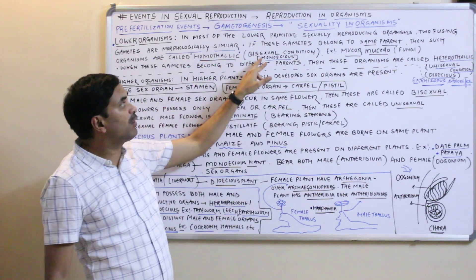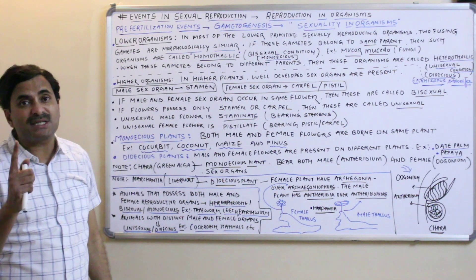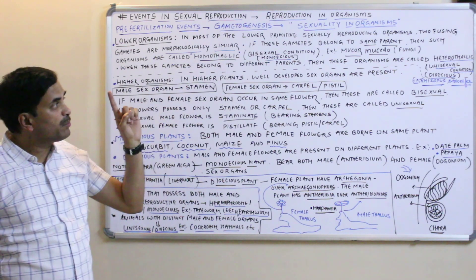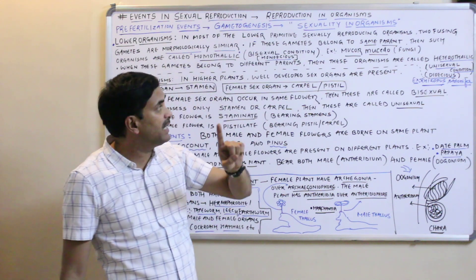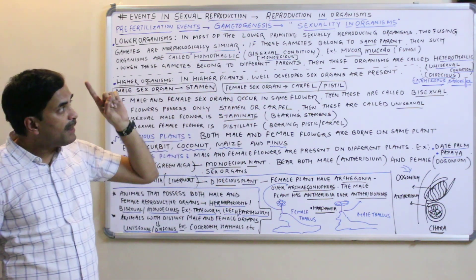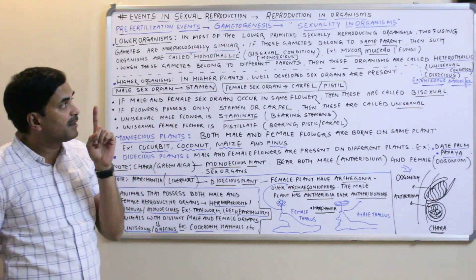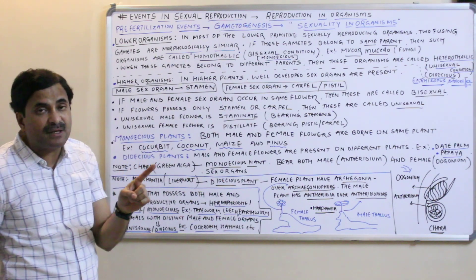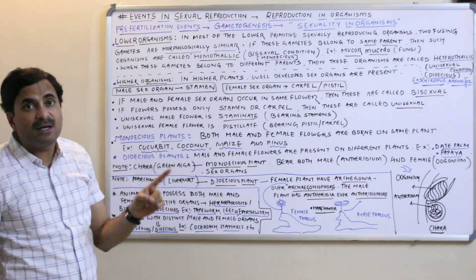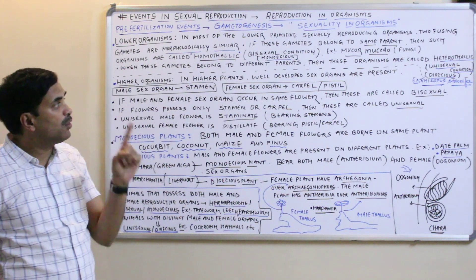Homothelic can also be called the bisexual condition or the monoecious condition. 'Mono' means one, meaning the same parent. If the gametes belong to the same parent, the organisms are called homothelic, or we can use the terms bisexual or monoecious condition.